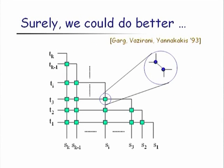One might think you could do better by being more sophisticated. Turns out there is a simple graph instance identified by Garg, Vazirani, and Yannakakis almost 20 years ago, which shows that this LP has an integrality gap of sqrt(M). This instance is a grid-like graph. Along the x-axis you have the sources, along the y-axis you have the sink vertices. The green blobs correspond to a gadget which ensures that paths entering must traverse a common edge to get to the other side.